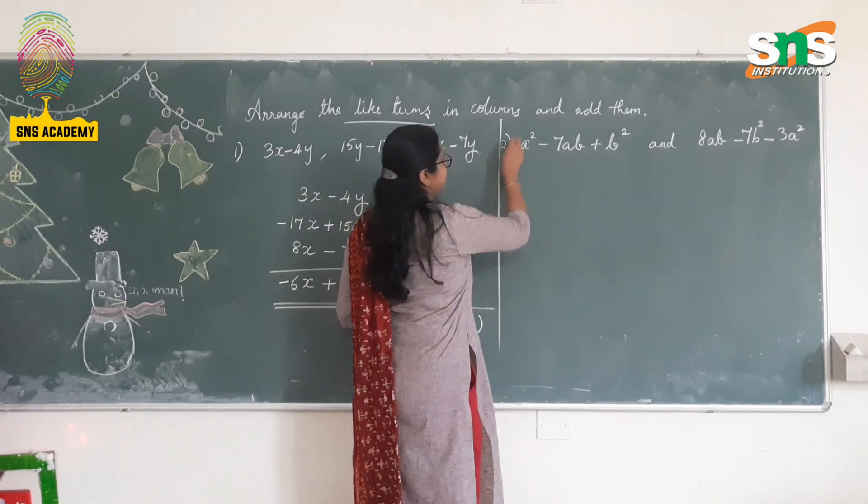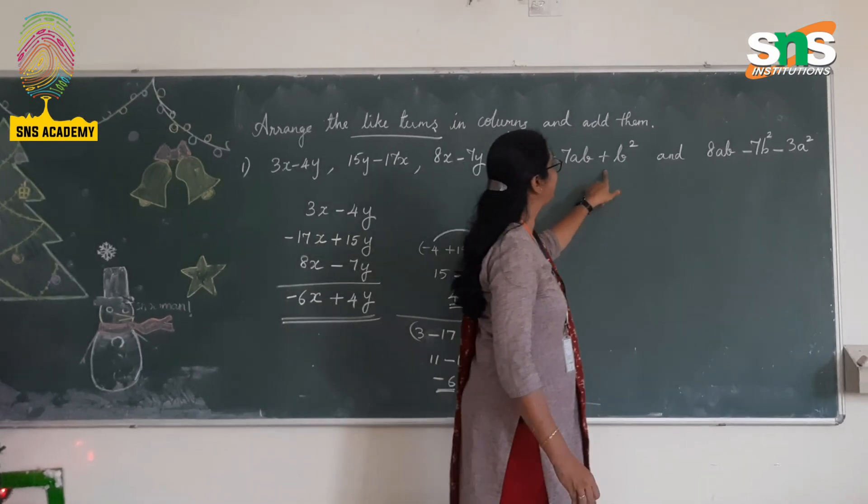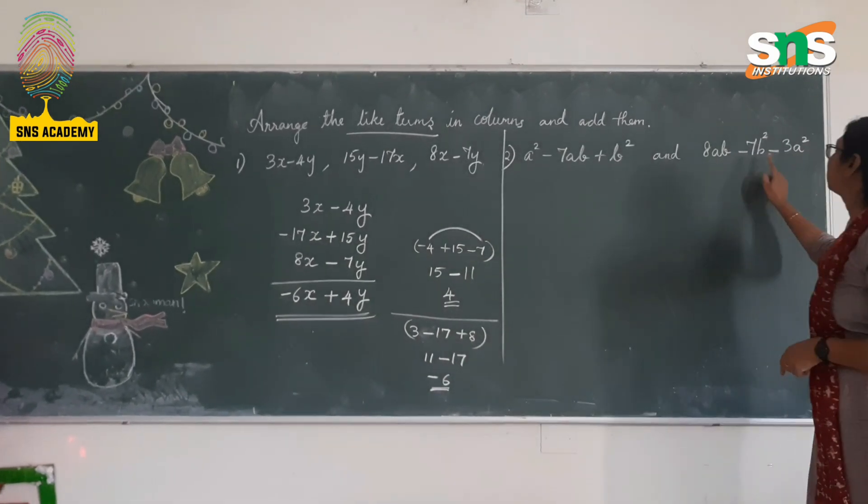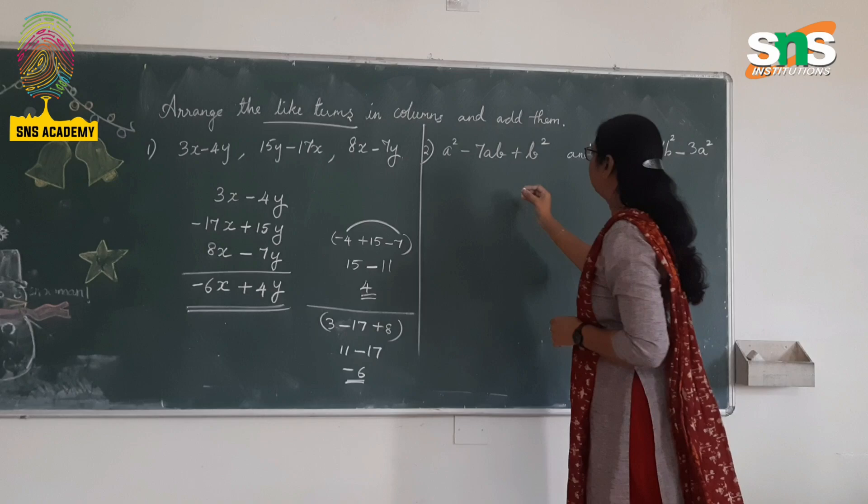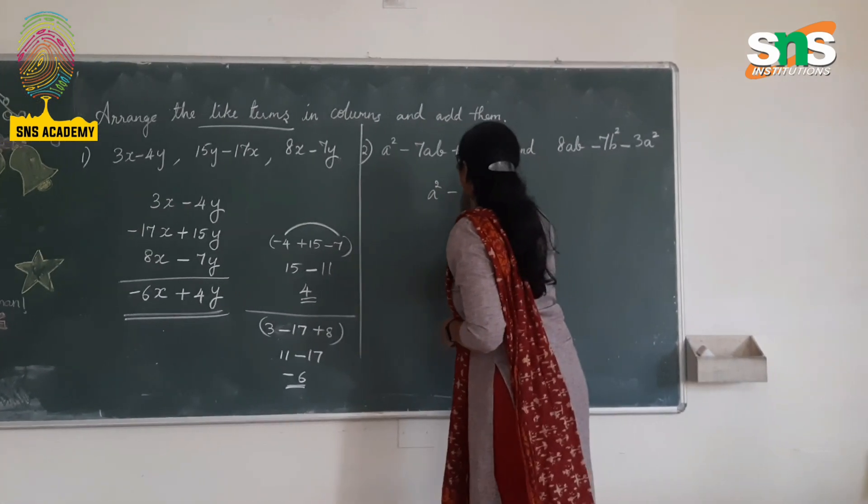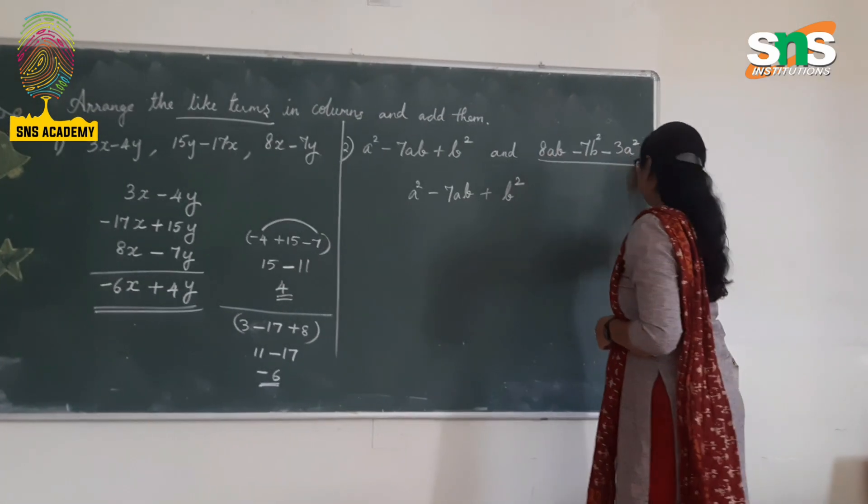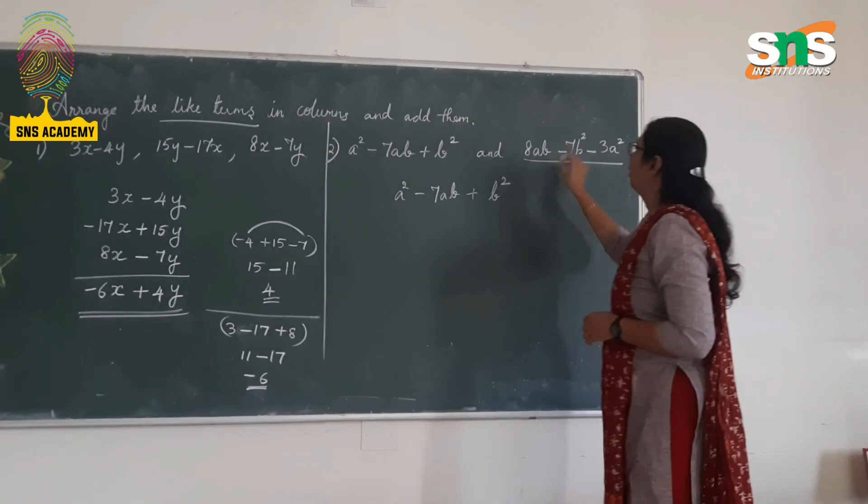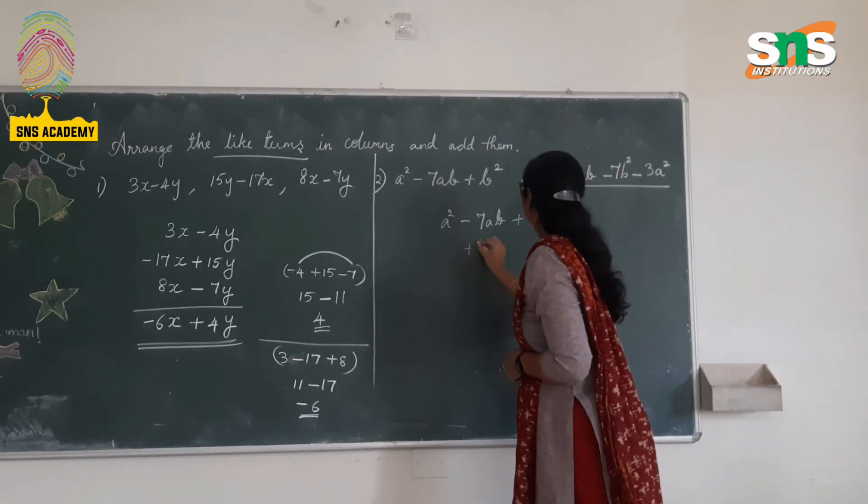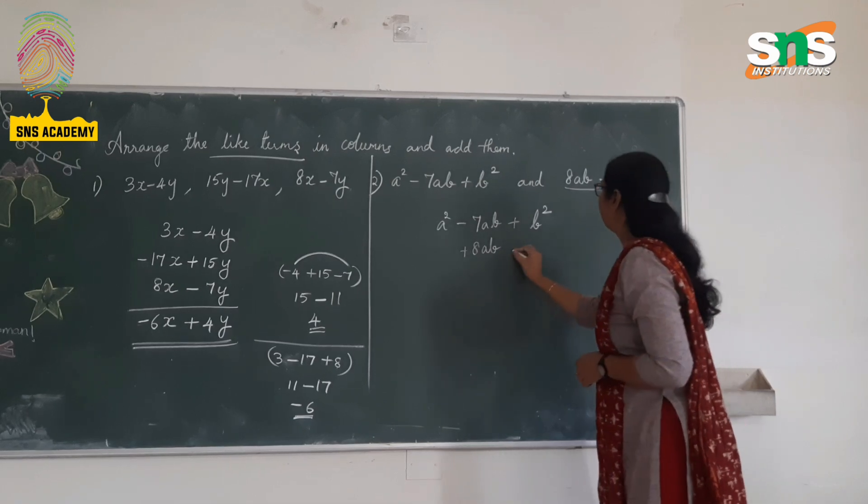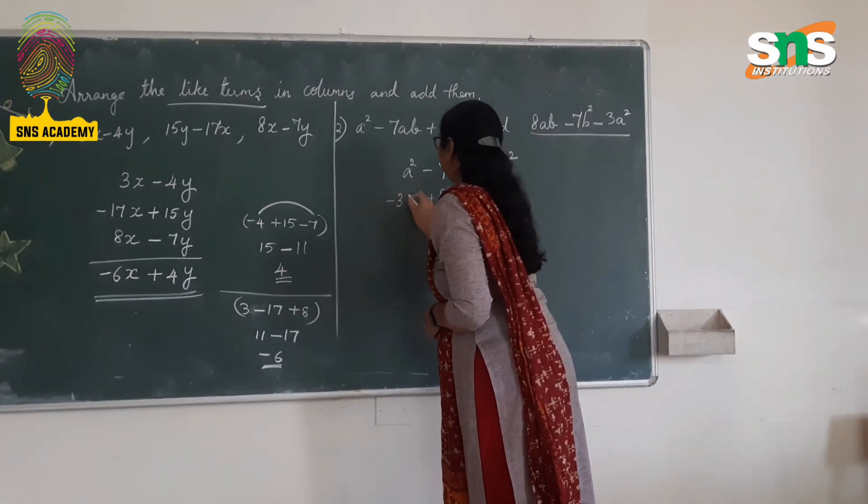And the second question here is this. Here there are two expressions. So it is a trinomial expression: a² - 7ab + b² and 8ab - 7bc - 3a². So arranging them as columns with like terms. First, let me write the first expression here: a² - 7ab + b². While arranging this second expression, check for the variables. That is, check for the like terms properly. So 8ab will come under 7ab, but the sign is positive. Positive 8ab. That means -7b². Also, a² is with -3a². -3a².